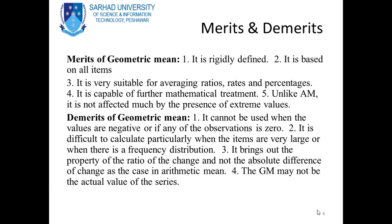Demerits of the geometric mean: it cannot be used when the values are negative or if any observation is zero; it is difficult to calculate, particularly when the items are very large or when there is a frequency distribution; it brings out the property of the ratio of change and not the absolute difference of change; and the geometric mean may not be an actual value of the series.